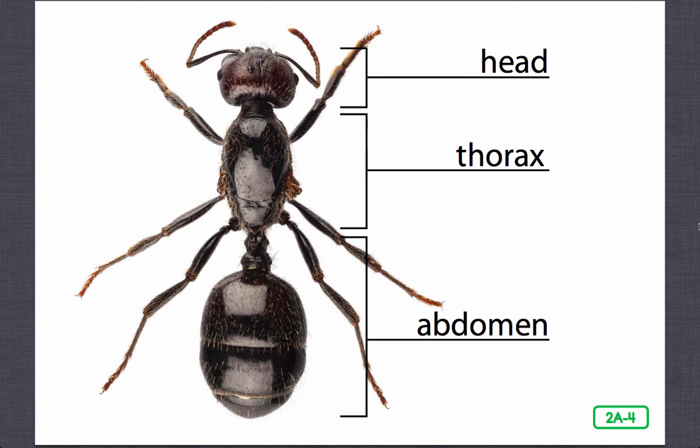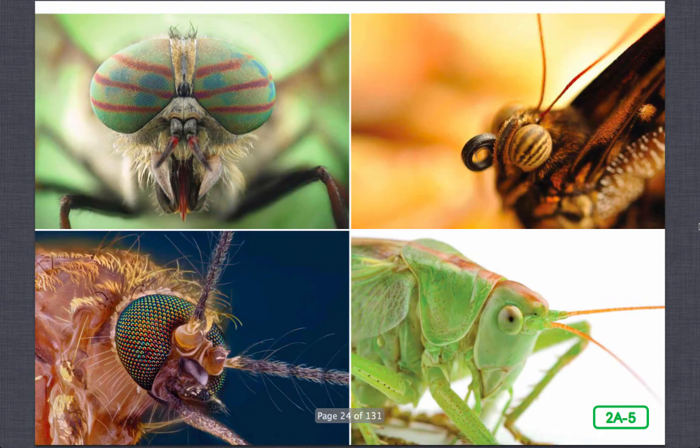The head is the center of an insect's senses, but different kinds of insects can have very different looking heads. The thorax is the middle part of the insect's body. The abdomen is the end of the insect's body, farthest away from the head. What do you notice about the heads of these common insects? Do they look anything like yours? Do they have eyes? Yes, they do, but they are different from your eyes. For one thing, many insects have more than two eyes.